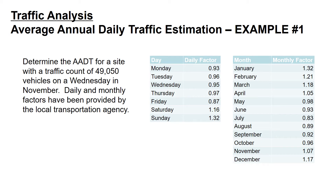We see a similar thing for the monthly factors. These are sample data specific to a particular location — you need to find locations similar to your site in order to use these monthly or daily factors. The highest value is in January, meaning that's the lowest traffic volume, and any data collected in January needs to be multiplied by that factor. The lowest value is in July, perhaps associated with tourism traffic at this location, so any data collected in July needs to be reduced to average out through the year. We'll see this as we apply the example, looking at a Wednesday in November.